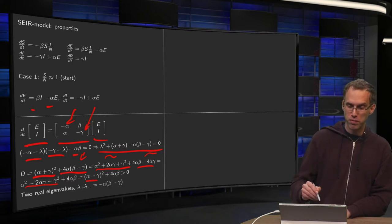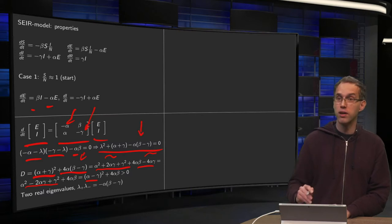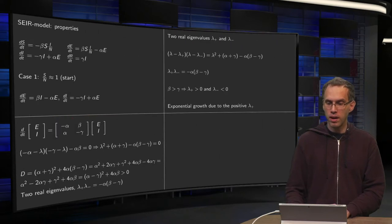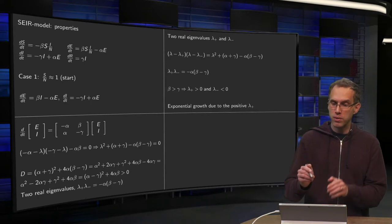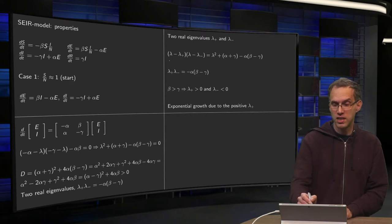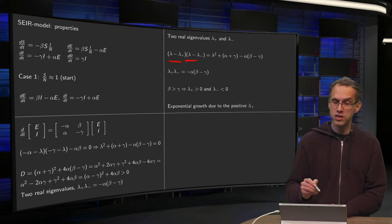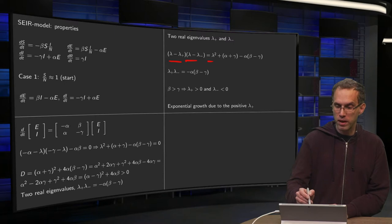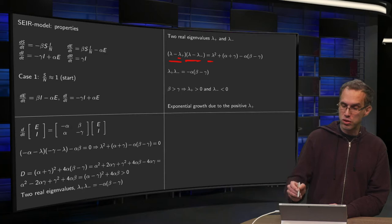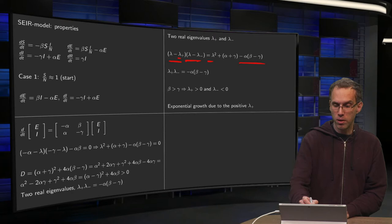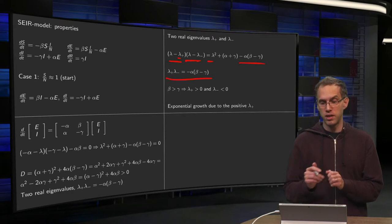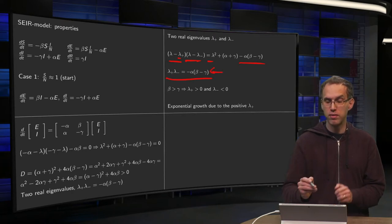Moreover, the product of your eigenvalues is always the constant term here. If you write your polynomial, if you factorize it as lambda minus lambda plus times lambda minus lambda minus, you get a lambda squared plus a mixed term and the constant term will be lambda plus times lambda minus. And this constant term has to be equal to minus alpha times beta minus gamma. So the product of your two eigenvalues is this number here, which is given in terms of your parameters.